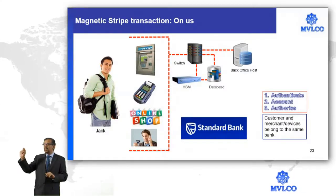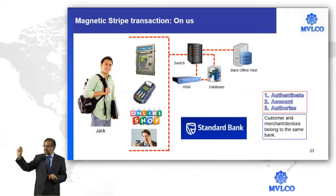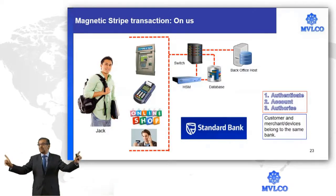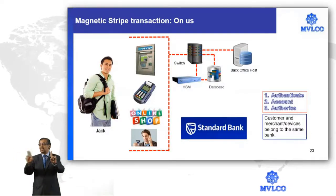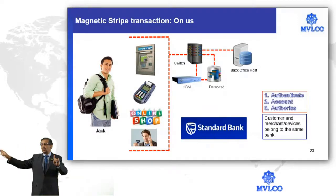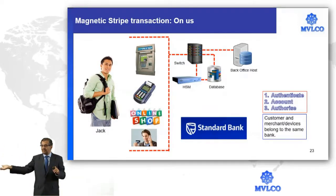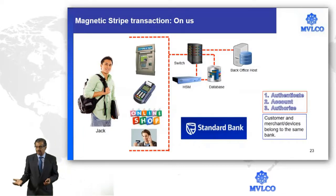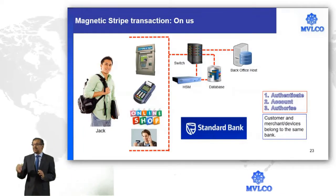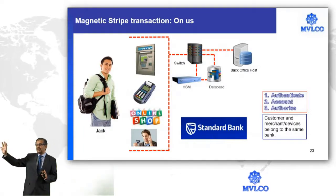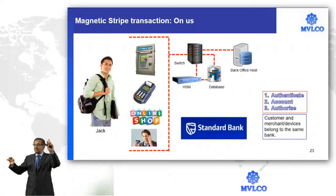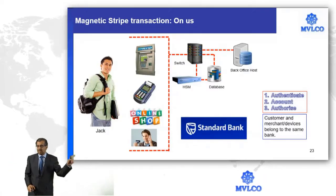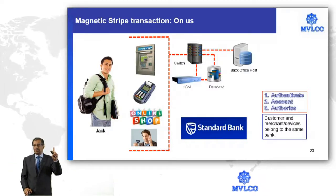In this case, your complete transaction data will be available in the back office. The switch will only act as a channel, asking the back office whether we can pay or we are not in a position to pay. Had this been a prepaid card, then I would have the pool-level data only at the back office and individual data at the switch — this is what we discussed earlier today.